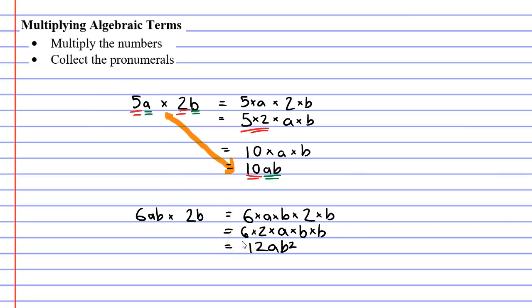When we look at our original question we could have simply gone 6 times 2 which is 12, and then we could have grouped together our pronumerals. We can see just by looking at it that we have 1a and 2b's. So we really didn't need to show all this working.